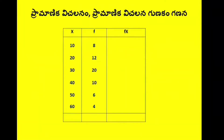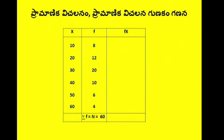So, the x values and the f values are the first ones. The frequencies are 8, 12, 20, 10, 6, and 4. So 8 plus 12 plus 20 plus 10 plus 6 plus 4 is equal to 60. Sigma f is equal to 60, and n is equal to 60.